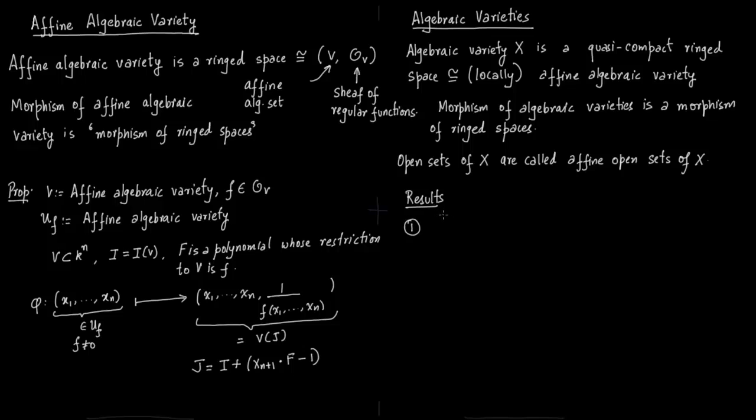So there are two results which I just want to mention. You can find them on page 45 of Daniel Perrin's book algebraic geometry. So the first one is, you have fixed X as an algebraic variety, affine open sets form the spaces of X.